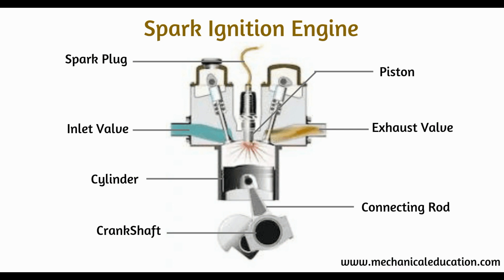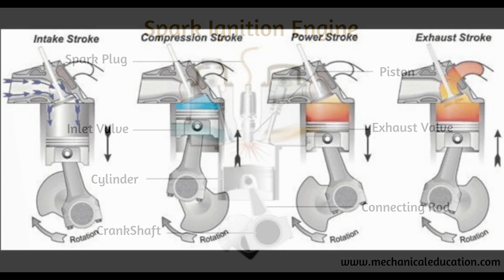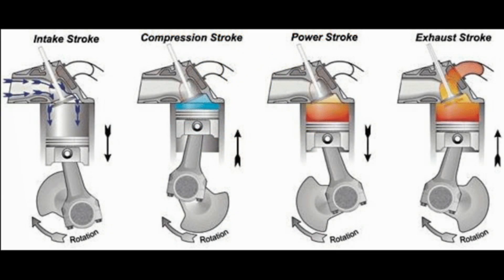This engine uses petrol as a fuel for its working. It works on the principle of the Otto cycle. The fuel in this engine is injected through a carburetor during the suction stroke. The compression ratio of this engine is usually 6 to 10. It has a lightweight engine and is used in light-duty vehicles like motorcycles, cars, etc.